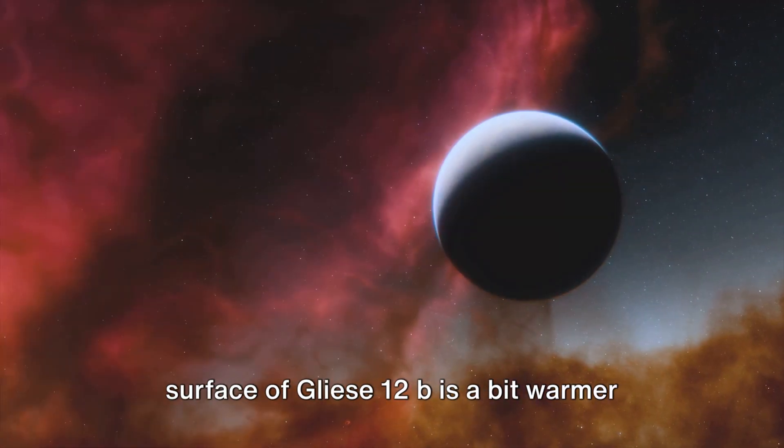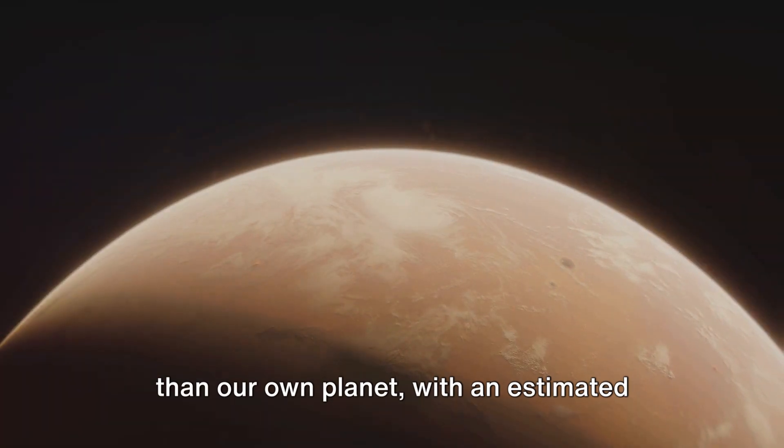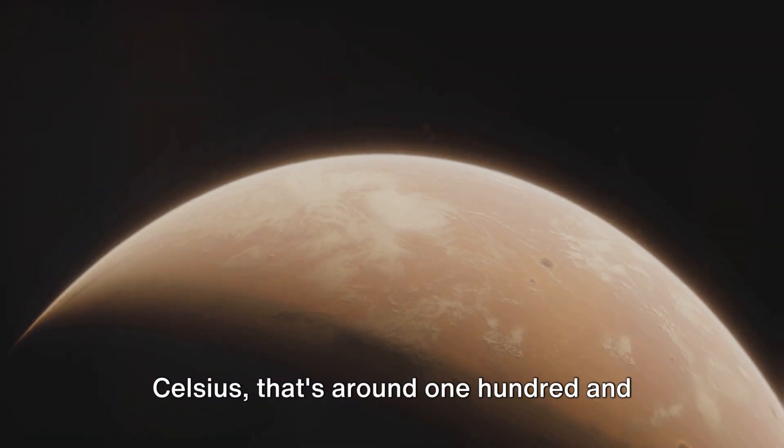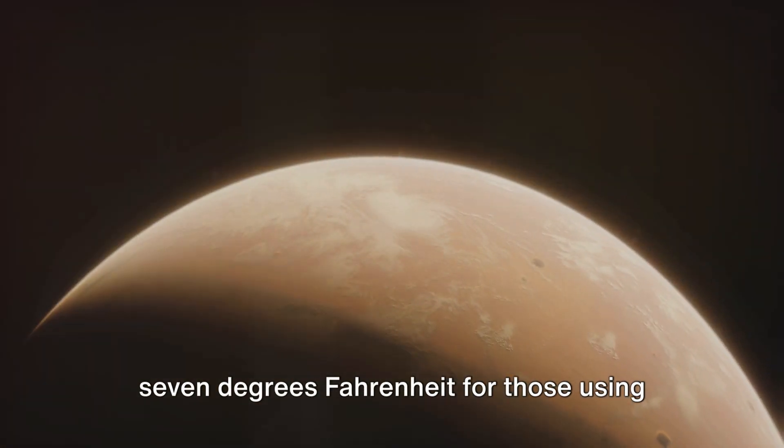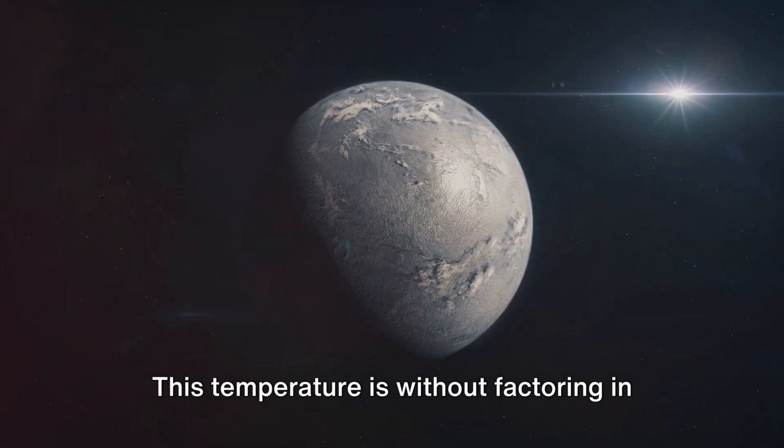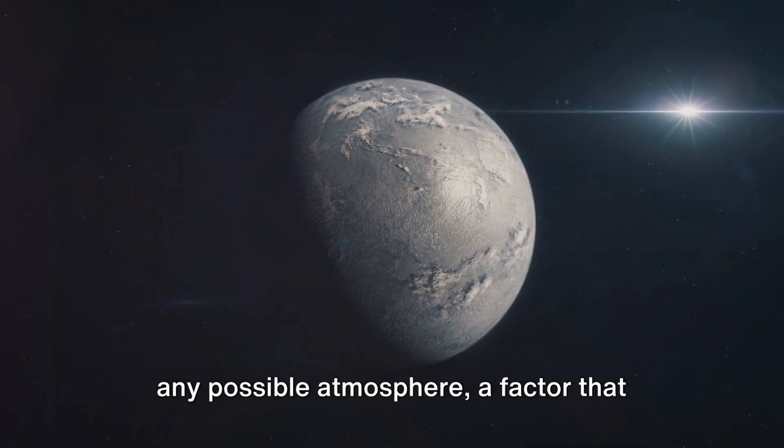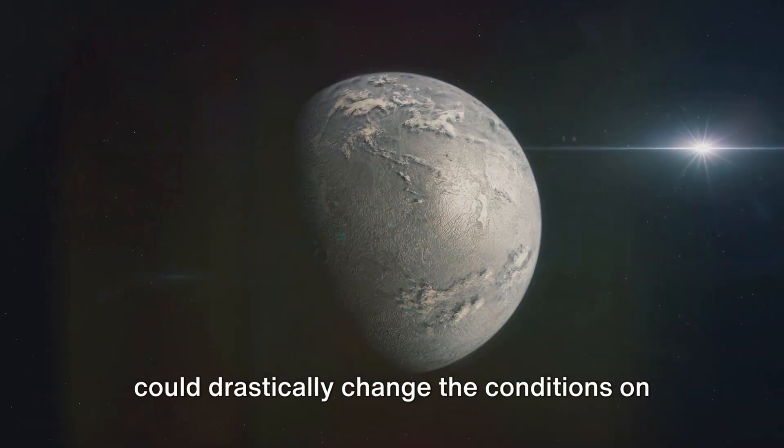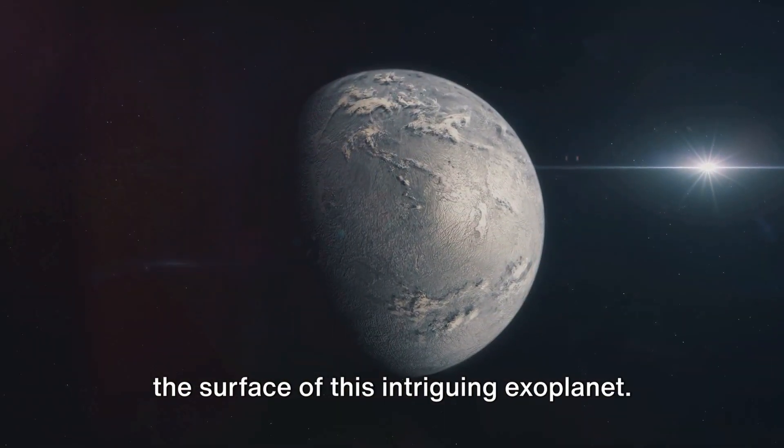The surface of Gliese 12b is a bit warmer than our own planet, with an estimated temperature of around 42 degrees Celsius, or 107 degrees Fahrenheit. This temperature is without factoring in any possible atmosphere, a factor that could drastically change the conditions on the surface of this intriguing exoplanet.